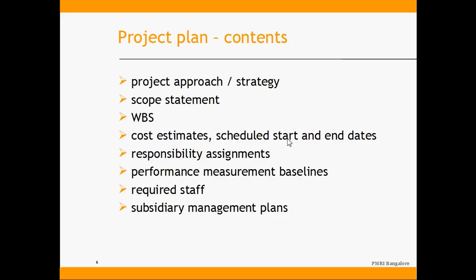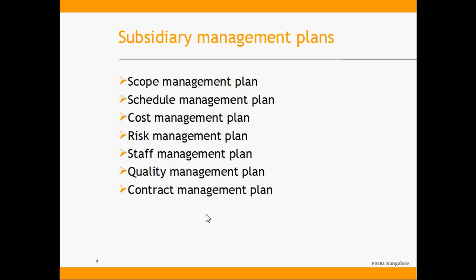Further contents include: cost estimates, schedule start and end dates for major activities, responsibility assignments, performance measurement baselines — such as allowed schedule variance, scope variance, and cost variance — and required staff. We also call it a ramp-up and ramp-down plan, since team size starts small, grows as the project progresses, then reduces at the finishing stages. Finally, subsidiary management plans must be documented: scope, schedule, cost, risk, staff, quality, and contract management plans.